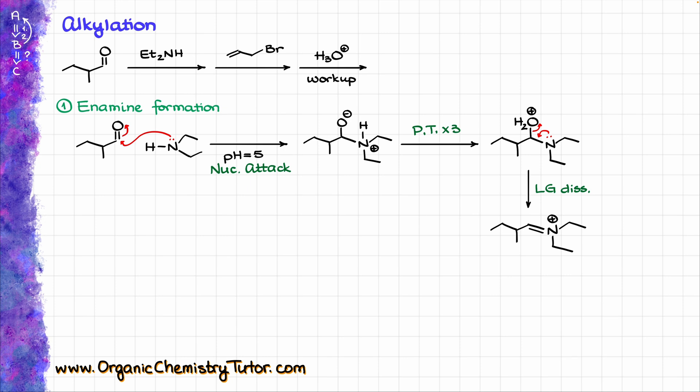This iminium intermediate is not particularly stable, so I'm going to bring another equivalent of my diethylamine, deprotonate this position like so, and that's going to give me my enamine as the final product of this step. I know that I ran through this mechanism very quickly, but as I've mentioned, I do have a dedicated video on this mechanism, so if you want to dive a little bit deeper and refresh this mechanism in your memory, you can go there, and the link is in the description below.